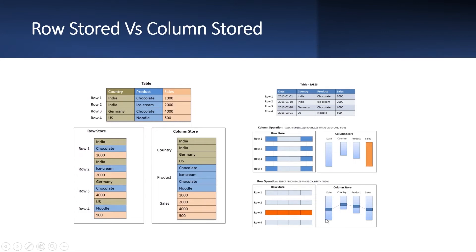A traditional database stores data simply in rows, but the HANA in-memory database stores data in both rows and columns. It is this combination of both storage approaches that produces the speed, flexibility, and performance of the HANA database. HANA systems use multiple storage types to process your workload, and the type used is determined by the data and configuration you are using.